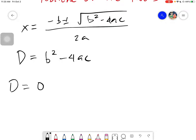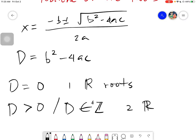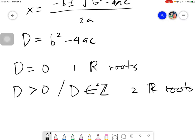If the discriminant is equal to 0, then you will have 1 real root. If the discriminant is greater than 0, or the discriminant is an element of all positive integers, then you will have 2 real roots. And lastly, if the discriminant is less than 0, or we say that the discriminant is an element of any negative integer, then you will have imaginary roots.